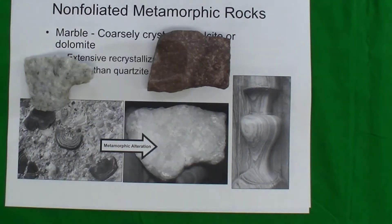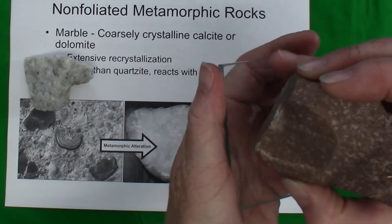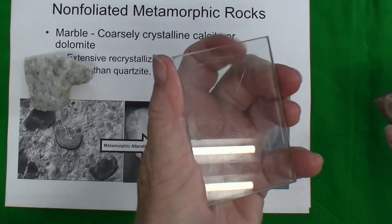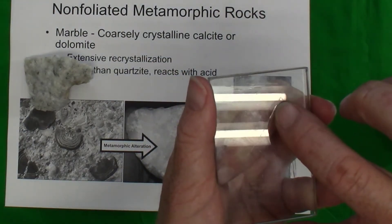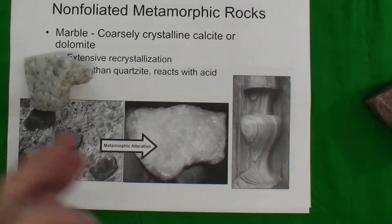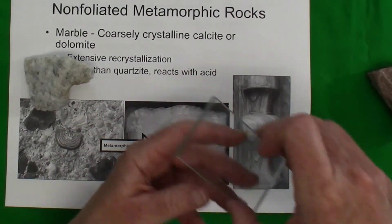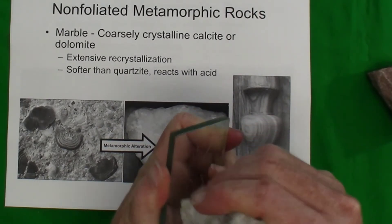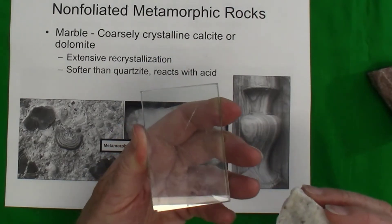Remember also that quartz is a hard mineral and should be harder than glass. It produces a significant scratch in the glass, indicating that it is harder than glass. Calcite is softer than glass, so if we try the same thing, it just pulverizes the mineral and does not scratch the glass.